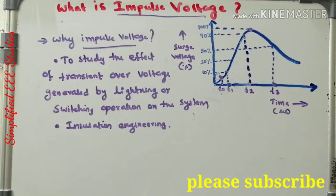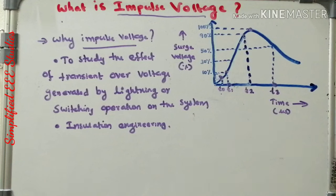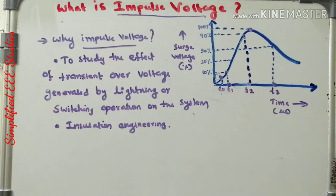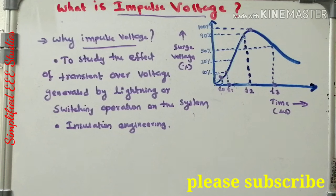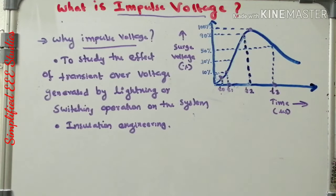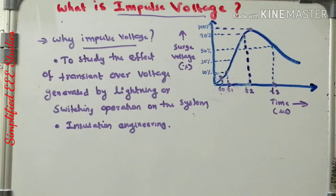Today I would like to conclude the session. We have discussed what is impulse voltage — it is basically a unidirectional voltage that rises rapidly to a maximum value and falls more or less rapidly to zero. I have mentioned what is wavefront and what is wavetail, the two segments of the impulse voltage waveform, and how to calculate them. I also explained the importance of impulse waveform generation — why impulse waveforms are required and what is the necessity. I hope you understood what is impulse voltage and why we generate it.